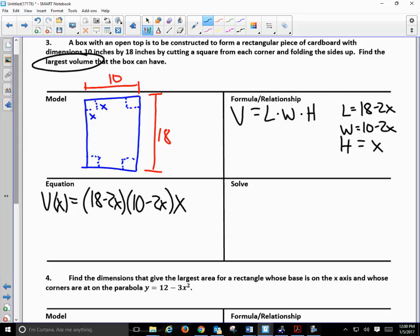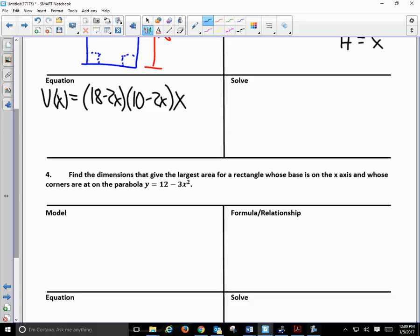Now, we could either leave it in factored form, or we could multiply it into polynomial form. Which one should we do? Why would you want to put it in polynomial form? Easier to take the derivative. Thank you. So we have volume in terms of x, and I'll start with the 18 times 10, and then I'll distribute the x through. 180x. And then when we do the insides, we get a negative 20 and a negative 36x, which is going to make negative 56, and then distribute the x, negative 56x squared. And then negative 2x times negative 2x times x will be a positive 4x cubed.